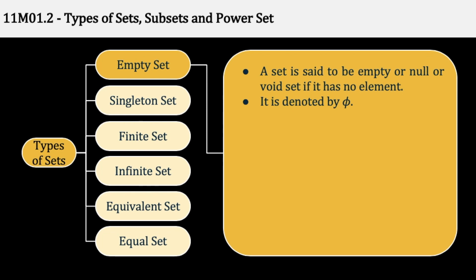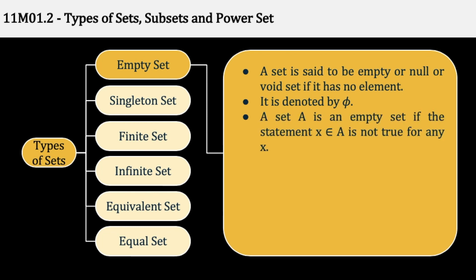It is denoted by the symbol phi. A set A is an empty set if the statement 'x belongs to A' is not true for any x. मतलब कोई भी x की value हो — कोई alphabet, number, thing, name, कुछ भी हो — x belongs to A कभी होगा ही नहीं, क्योंकि A में कोई element है ही नहीं। Example: x belongs to R such that x² = -2. हम जानते हैं कि squares हमेशा positive होते हैं और कोई भी x की real value के लिए x² = -2 नहीं हो सकता।